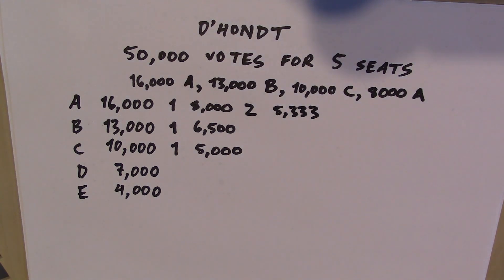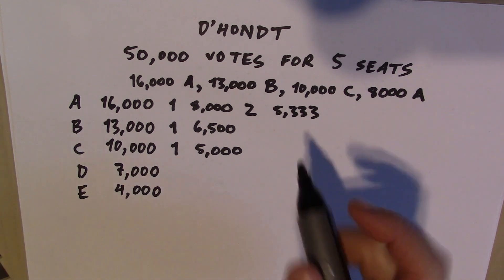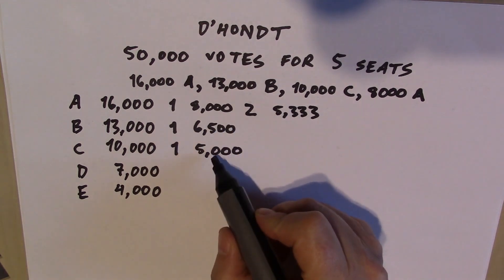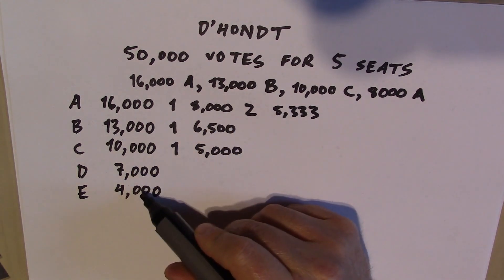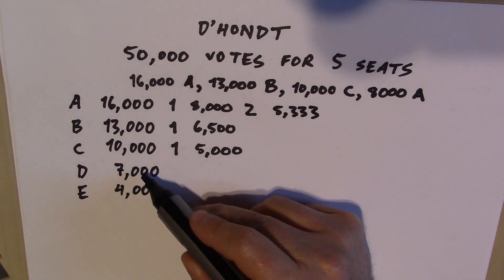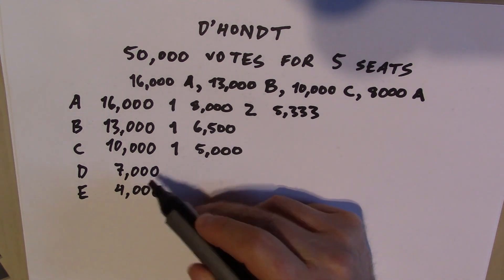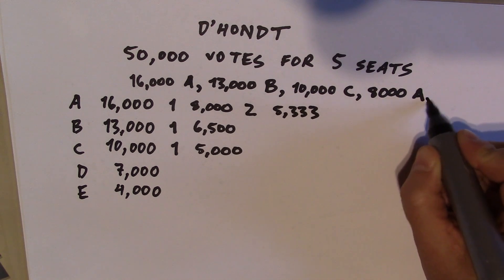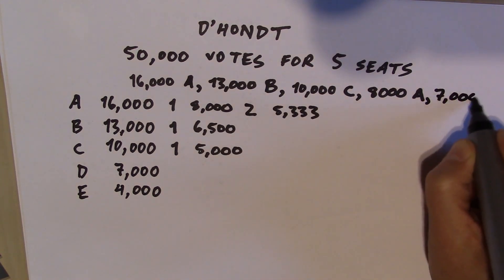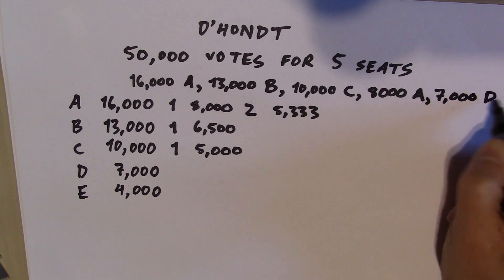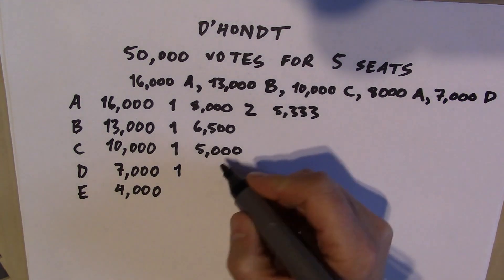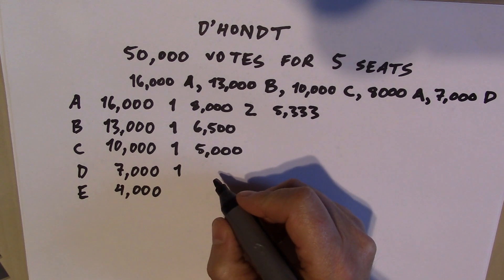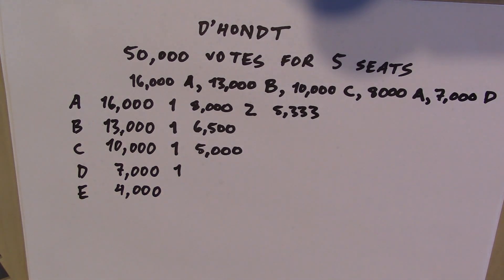We will reduce the price from 8,000. The next number that would make a difference could be 5,333, 6,500, 5,000, 7,000, or 4,000. The next number that would make a difference is 7,000, so we reduce the price of a seat to 7,000 votes — and that lets Party D get a seat. We can stop there because we've awarded exactly 5 seats.